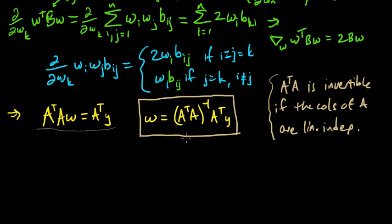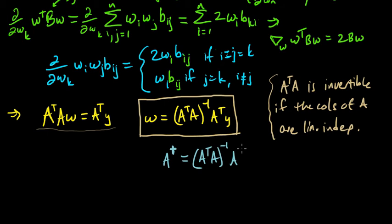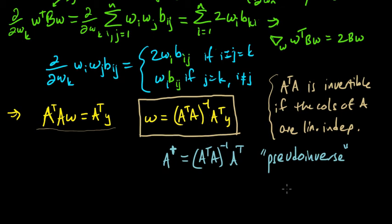As an aside, this quantity here — A plus, or A dagger — is usually denoted A⁺ or A†, and it equals A transpose A inverse times A transpose. It's called the Moore-Penrose pseudo-inverse. It's a beautiful linear algebra thing — it's sort of like the closest thing to inverting A, in some sense.